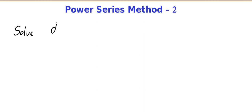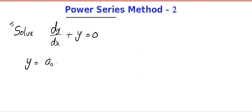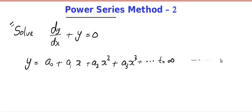Please write: solve the differential equation dy by dx plus y equal to 0. This is somewhat similar to the problem we did last day. So what we do is, we assume our solution to be a Power Series — that is, a naught plus a1 times x plus a2 times x square plus a3 times x cube plus dot dot dot to infinity. We believe this is our answer.